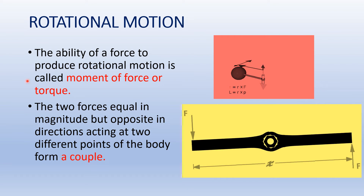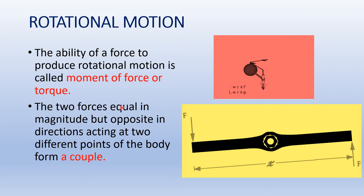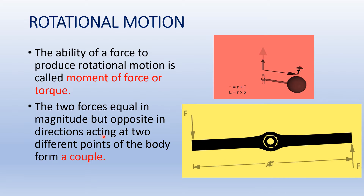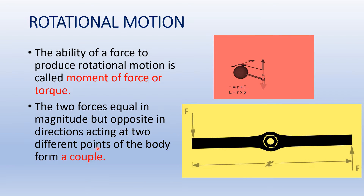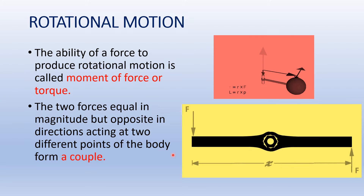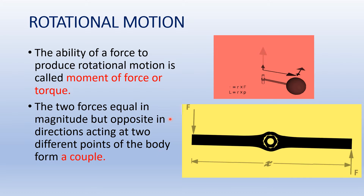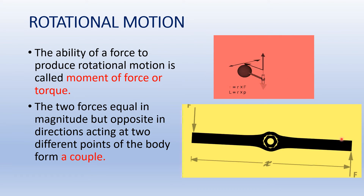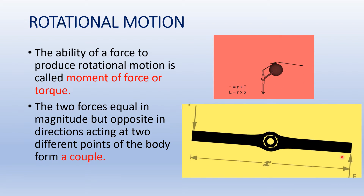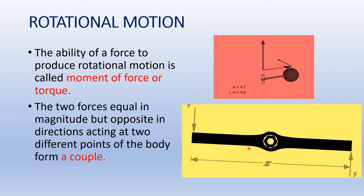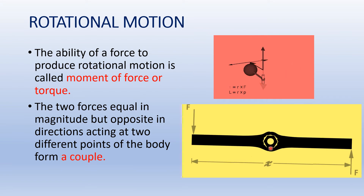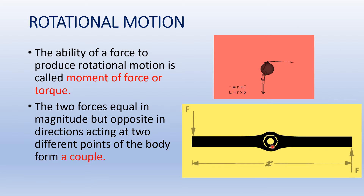What is a couple? Two forces equal in magnitude but opposite in direction, acting at two different points of a body, form a couple. In this GIF, these two forces are equal in magnitude but opposite in direction, and they are acting on two different points, and due to this, they form a couple.